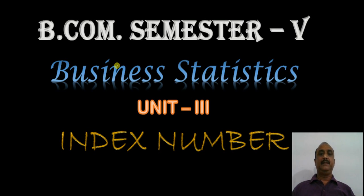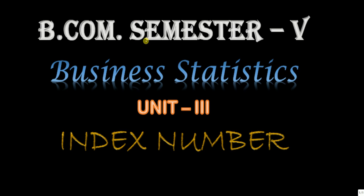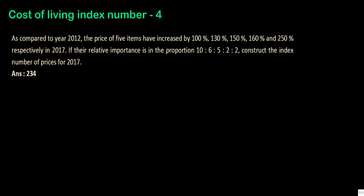Hello everyone. In Business Statistics Unit 3 Index Number, we completed three videos on cost of living index number. Now we are going to start our fourth and last video of CLI. Let us start our sums. The first sum is of cost of living index number. The question is: as compared to year 2012, the price of five items increased by 100%, 130%, 150%, 160%, and 250% respectively in year 2017. Construct the index number of price for 2017.